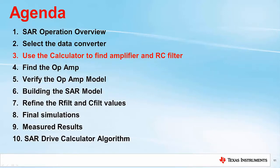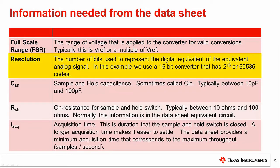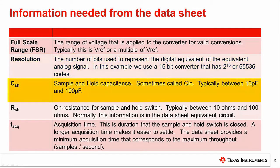Let's move to the third step where we walk through how to use a software tool to find the amplifier and RC charge bucket filter components. We will use the ADC SAR drive calculator to find the starting values used in Tina-SPICE for optimization. This slide summarizes and defines the information needed for the software calculator. The full-scale range is the range of voltage applied to the converter for valid conversions — typically VREF or a multiple of VREF. Resolution is the number of bits used to represent the digital equivalent of the analog signal. In this example, we use a 16-bit converter that has 2^16, or 65,536 codes. CSH is the sample and hold capacitance, sometimes called CN, and is typically between 10 picofarads and 100 picofarads.